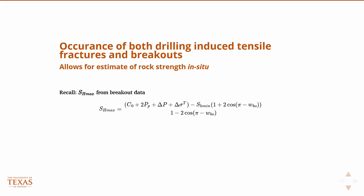Because the breakout is in equilibrium with the rock stress, there was an equation we presented when talking about breakouts that showed SH max as a function of the unconfined compressive strength of the rock — C-O — along with pore pressure, reservoir parameters, SH min, and the wellbore breakout width measured in radians. We can log the well to get the wellbore breakout width, and if we know the other reservoir parameters and the rock strength, then we can determine SH max.